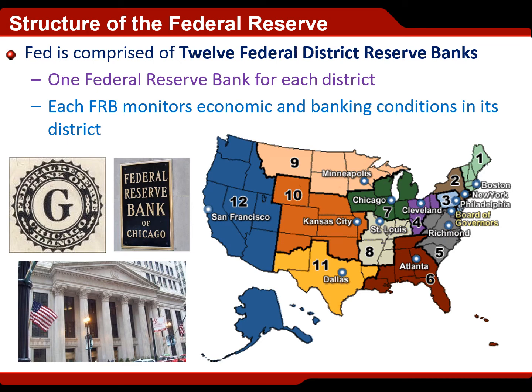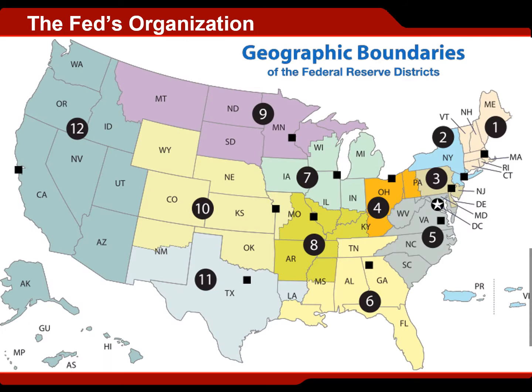So your dollar bill originated from somewhere within that seventh district — it could have come from Detroit, Chicago, Green Bay, Wisconsin, or many other places within that green zone, and somehow found its way into your pocket. Here in Houston, we actually have a Federal Reserve branch called the Federal Reserve of Dallas-Houston branch, and you can actually go there for a tour — it's pretty cool.